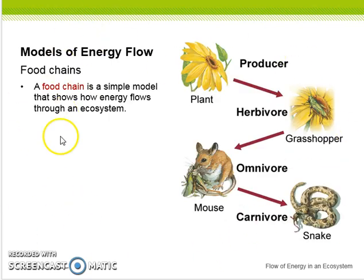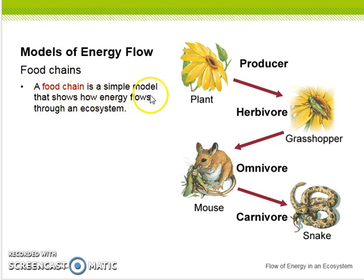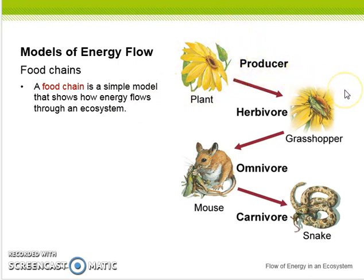Everything on this slide you'll need to copy down, especially the diagram. A food chain is a simple model that shows how energy flows through an ecosystem. Starting with the plant, which is the producer, it moves to the herbivore grasshopper, which moves to an omnivore — the mouse — to the carnivore, the snake.